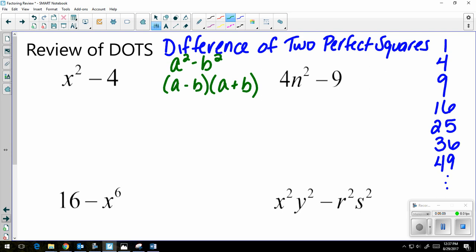Remember that the parentheses should be exactly the same, except one gets a positive and one gets a negative. So I'm going to set this up. One gets a positive, one gets a negative, and I'm going to square root each piece. The square root of x squared is x and the square root of 4 is 2. So in factored form, I have x plus 2, x minus 2.